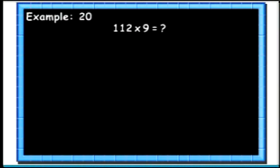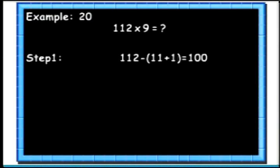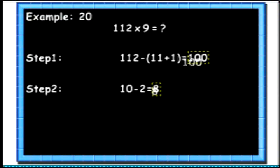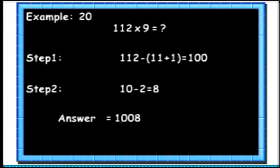Let's see another example. Here we will multiply 112 with 9. Step 1: subtract 12 (that is 1 added to the first 2 digits) from the number. Step 2: find 10's complement of the last digit. Step 3: join both the values together to get the result. So we get the final answer as 1008.